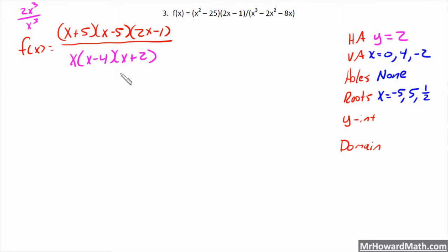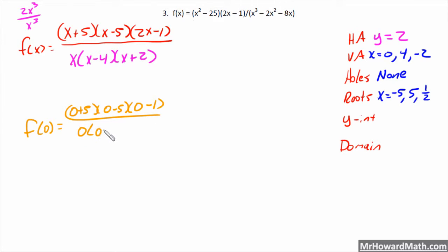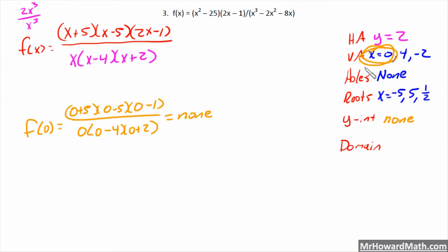The y-intercept occurs when x = 0, so we evaluate f(0). Substituting, the denominator contains a factor of 0, making it undefined — so there is no y-intercept. We should also realize there can't be a y-intercept because we have a vertical asymptote at x = 0, meaning we never cross the y-axis.